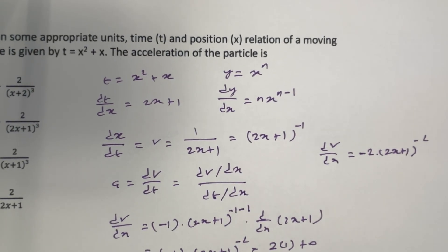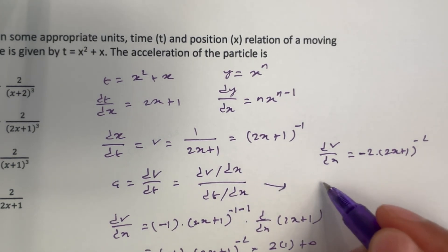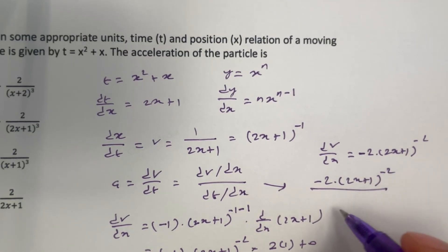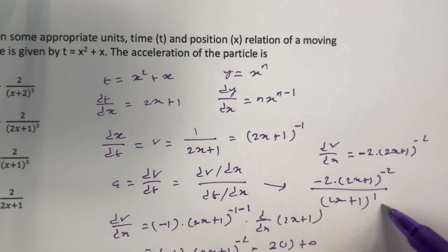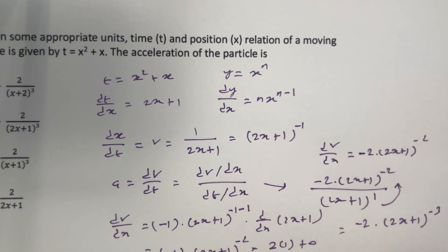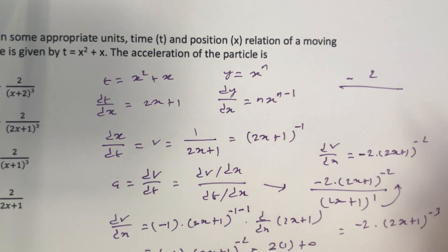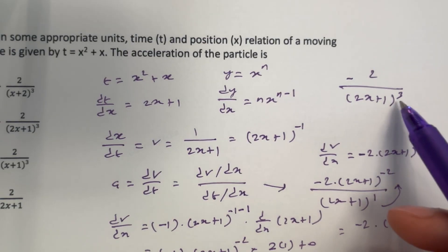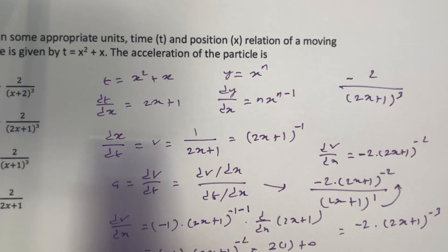So we have dv by dx, and we already know what dt by dx is. Therefore, acceleration dv by dt will be minus 2 times (2x plus 1) to the whole power minus 2, divided by dt by dx which is (2x plus 1). This gives us minus 2 times (2x plus 1) to the whole power minus 3, which we can write as minus 2 divided by (2x plus 1) cubed. That is what we have in option 2.